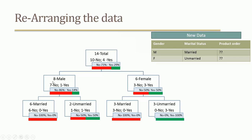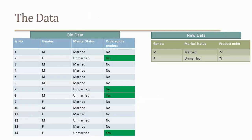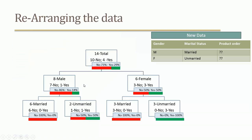Out of 14, I have focused on 8 male customers. Within all male customers, 7 did not order anything and only 1 ordered the product. So the order percentage within males is 14%, and the did-not-order percentage is 86%. Within male customers, 86% did not order.